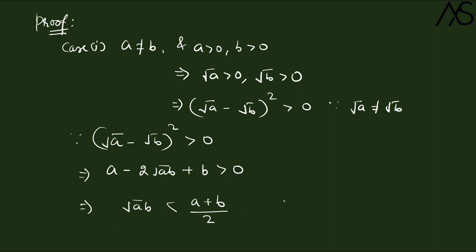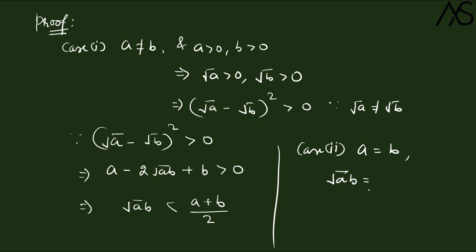Case 2: When a = b. If a equals b, then a × b = a² so √(ab) = a, and (a + b) / 2 = (a + a) / 2 = a. So both sides are equal. Combining Case 1 and Case 2, we can conclude that √(ab) is always less than or equal to (a + b) / 2 — that is, the geometric mean is always less than or equal to the arithmetic mean. This completes the proof.